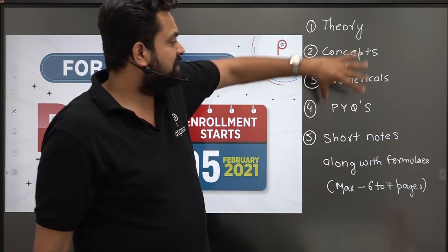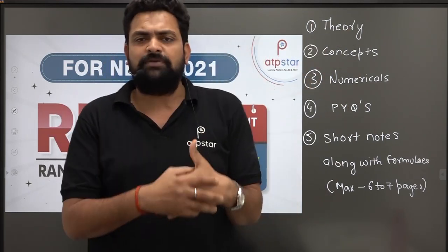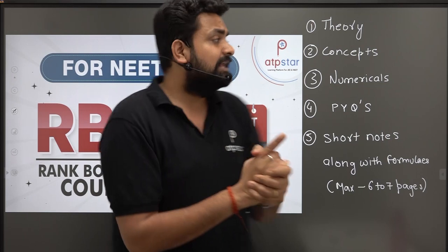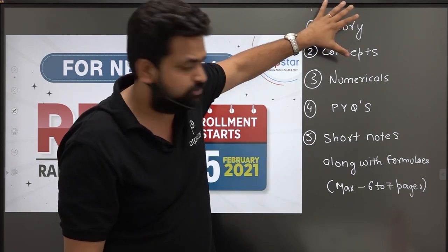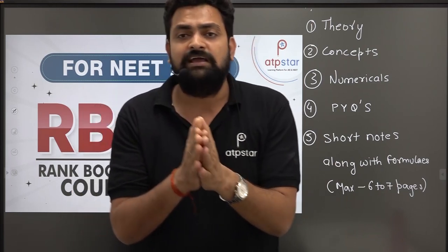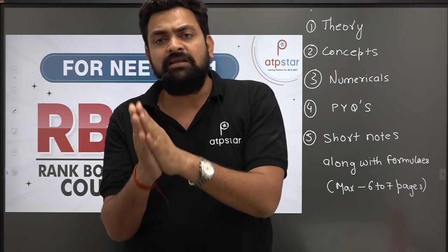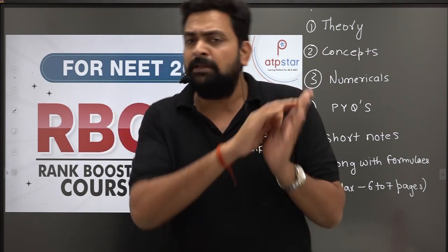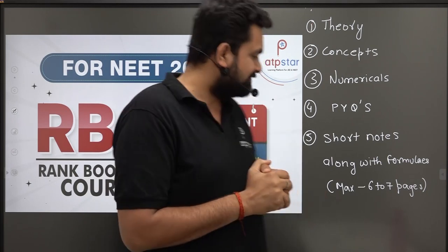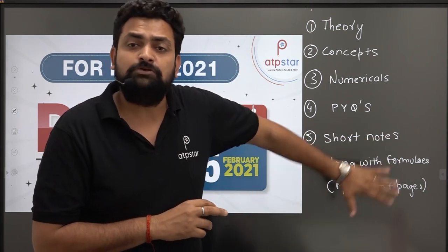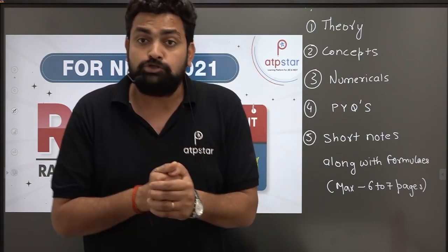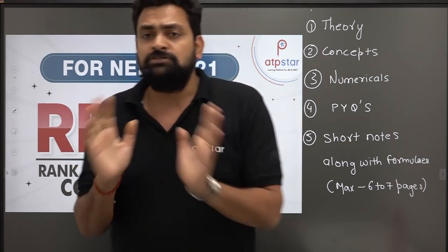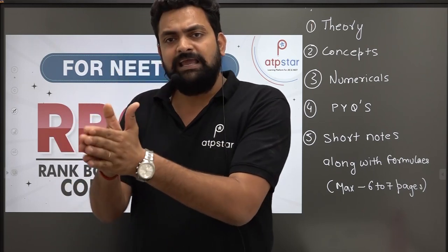Moving on — short notes बनाएं जैसे ही chapter खत्म हो जाए। जैसे ही teacher ने आपको chapter खत्म करा दिया और आपने हर जगह से सवाल लगा लिए, तो short notes बनाते वक्त एक बात का बहुत अच्छे से ध्यान दें — जो भी theory और concepts आपने सीखे हैं, उनको आप 6-7 pages के बीच में summarize करने की कोशिश करें। क्योंकि long run में आपको यह इतने आसान लगने चाहिए कि आप कभी भी आओ तो 6-7 pages बहुत easily cover कर लो। Short notes में problems भी लिखेंगे — सिर्फ और सिर्फ problems, solutions नहीं।